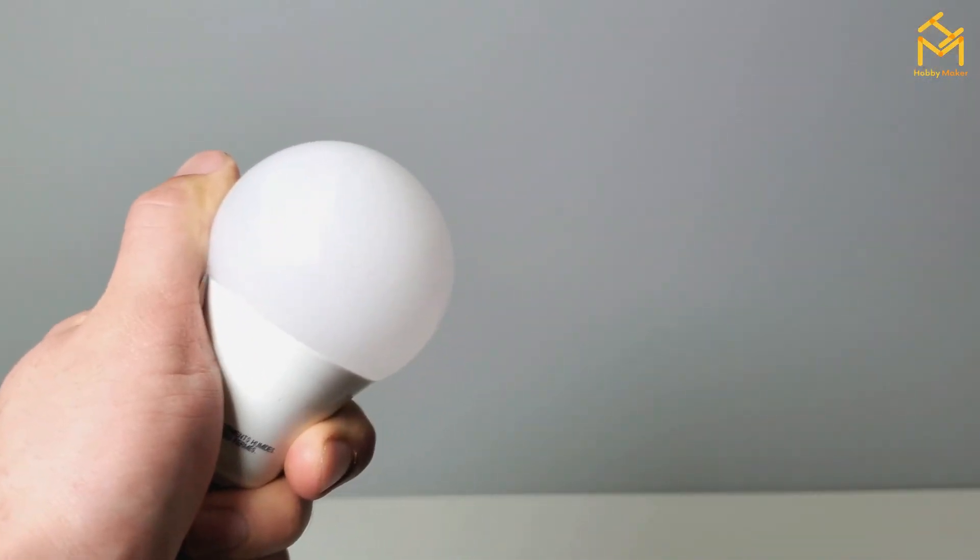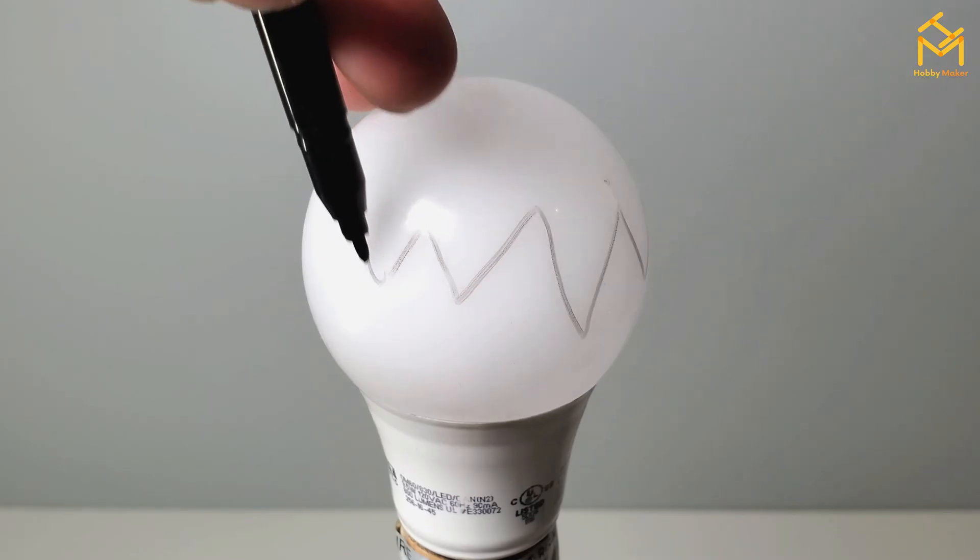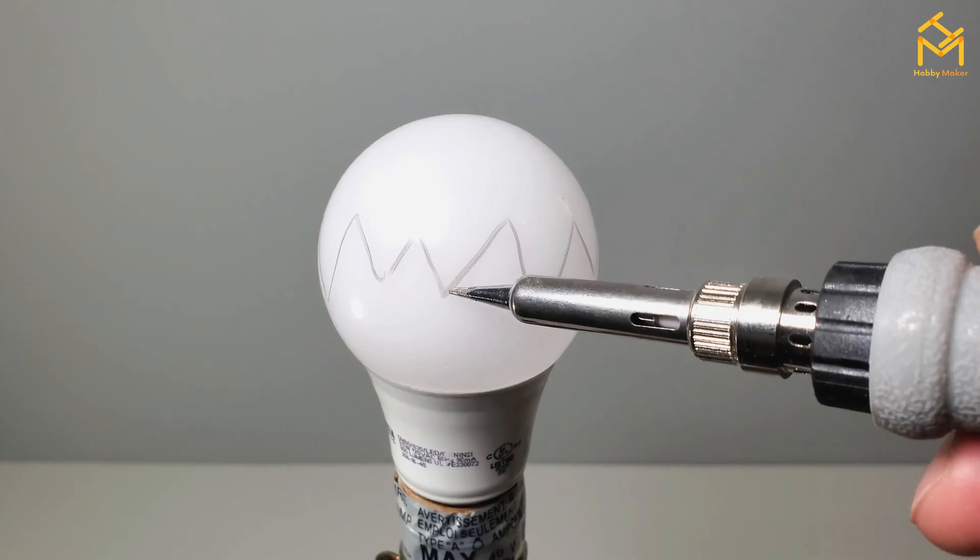Just so you know, I couldn't break this light bulb because it's plastic and it's really hard. Even if you throw it, you can't break it at all. So I had to draw it like this and cut it out with a soldering iron.